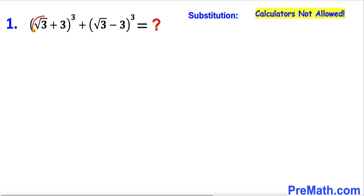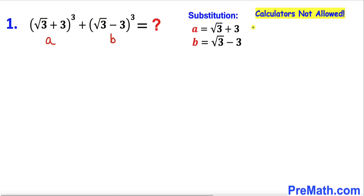Let me call the part inside the first parentheses as 'a' and the part inside the second parentheses as 'b'. So therefore our a equals square root of 3 plus 3, whereas our b is square root of 3 minus 3. Then our task is to find the value of a cubed plus b cubed.